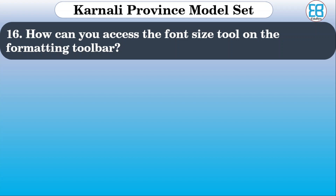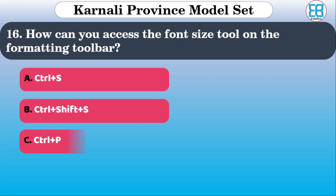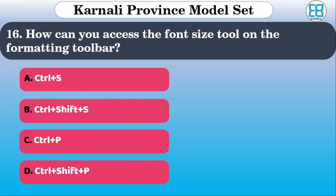How can you access the font size tool on the formatting toolbar? The shortcut options are: Ctrl+S, Ctrl+Shift+S, Ctrl+P, Ctrl+Shift+P. The correct option is Ctrl+Shift+P.